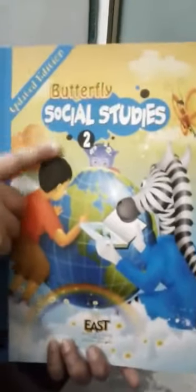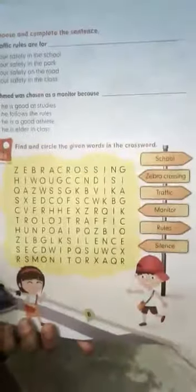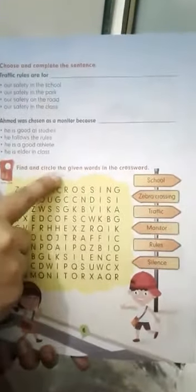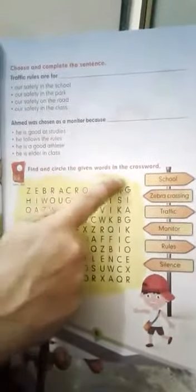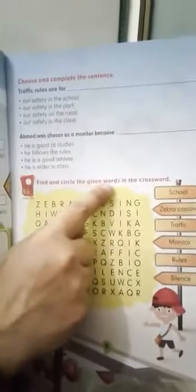Assalamu alaikum students, it's your butterfly social study class 2. Today we will do exercise of our first chapter for our own safety. Page number 6, find and circle the given words in the crossword. Find and circle the given words in the crossword.